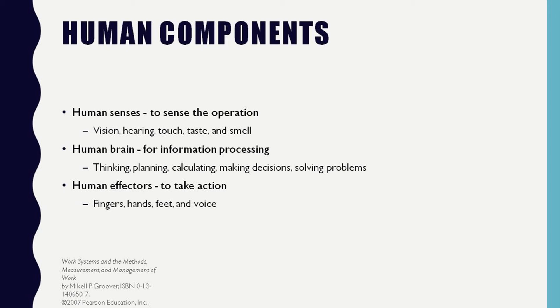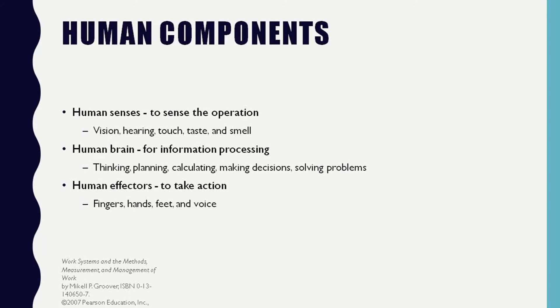The five human senses are vision, hearing, touch, smell, and taste. The human brain is responsible for information processing, which includes all cognitive activities — thinking, planning, calculating, making decisions, and solving problems.